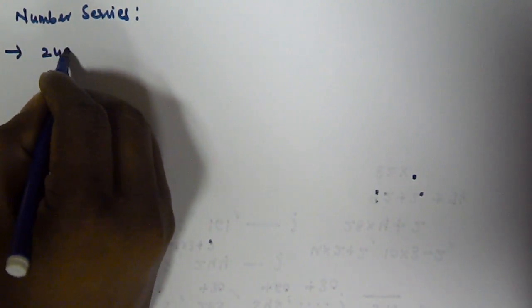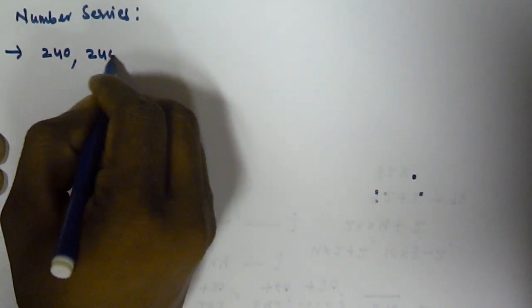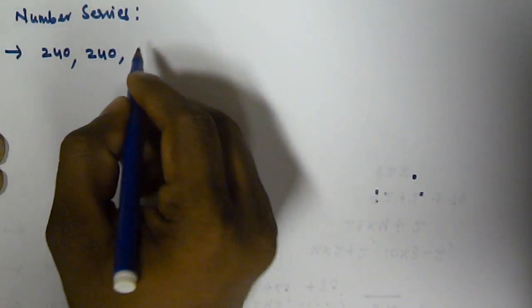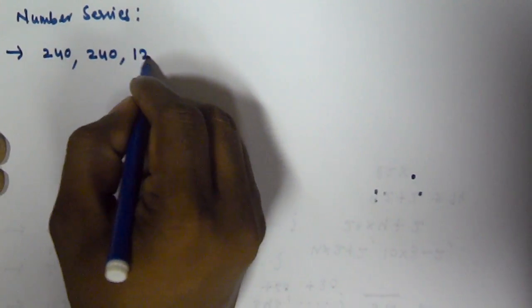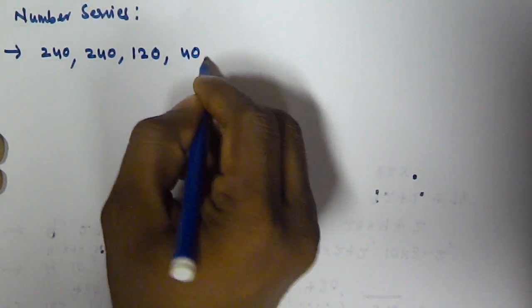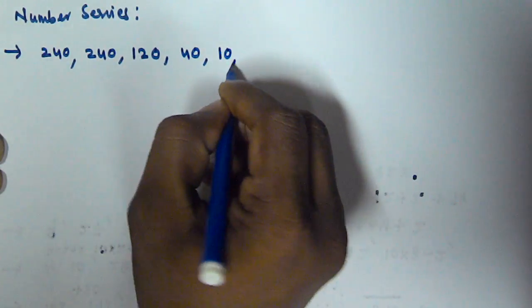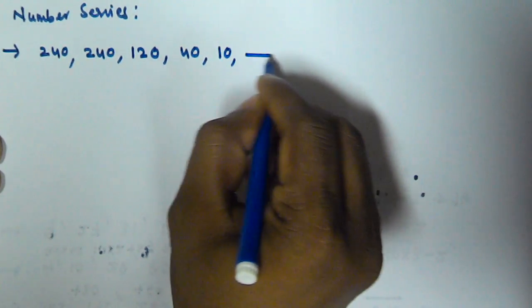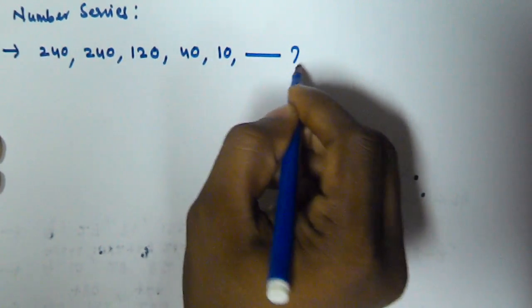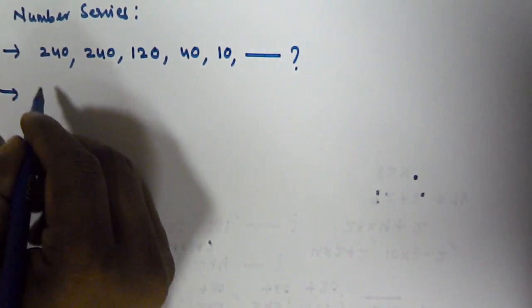The first problem has the series: 240, 240, 120, 40, 10 — and we have to find what is the next number.